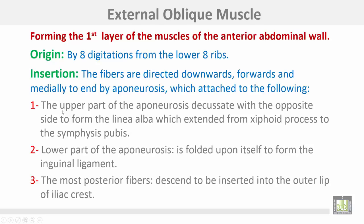The external oblique muscle forms the first layer of the muscles of the anterior abdominal wall. It takes origin by eight digitations from the lower eight ribs. Its fibers are directed downwards, forwards, and medially, ending by an aponeurosis which attaches to the following structures.